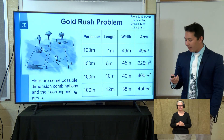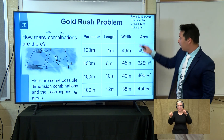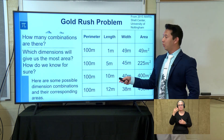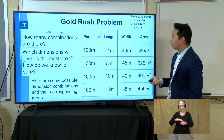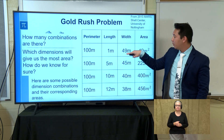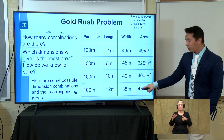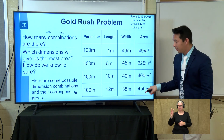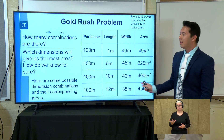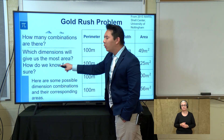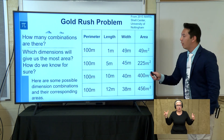Keeping that in mind, think about how many possible combinations there are before we get to the dimensions that give us the most area. How many combinations do I need to list in order to get the largest area? Is 456 square meters the largest? What happens when I go to 15 meters by 35 meters? And how do we know for sure that we have found the absolute largest area?